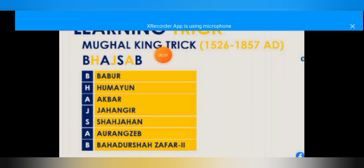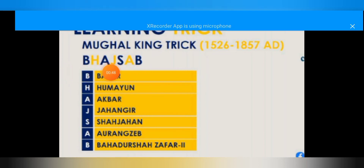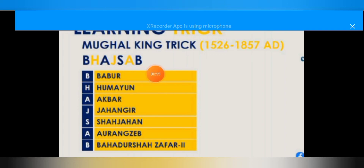The Mughal King era is from 1526 to 1857. You can learn it by using the alphabets BHAJSAP. You can also learn it as BASB with HJA applied, making it easy to remember the sequence of kings.